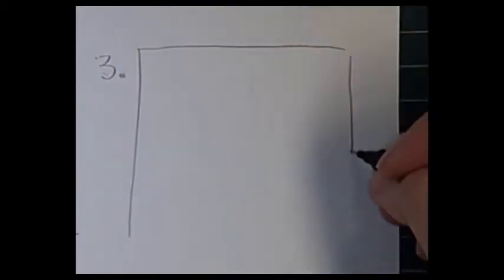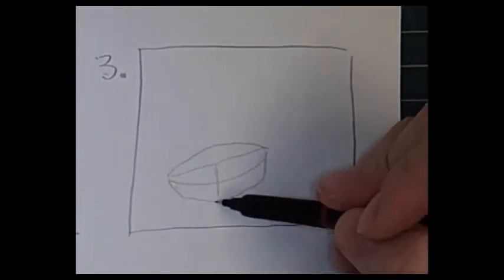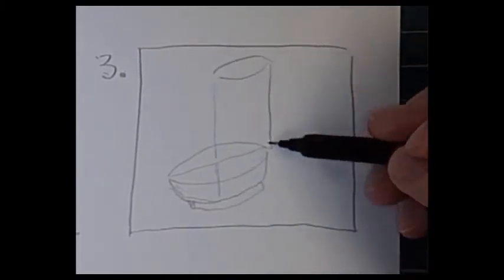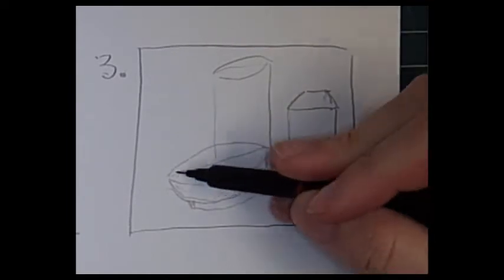Here's a third angle. This is kind of straight on. And again, I'm drawing the thumbnail box first. And drawing ellipses, drawing through the objects to help myself create overlapping.